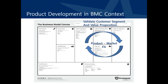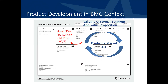Just to reiterate, the Value Proposition Canvas demonstrated the importance of validating the customer segment and the value proposition for validating product-market fit. Product development fits in the key activities box of the Business Model Canvas framework. It is the key activity that allows you to deliver the value proposition, since it delivers the minimum viable product, or the MVP, as well as follow-on products and solutions. We'll also see how key partners and key resources are critical to product development.